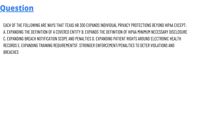So, our today's question which we will be discussing is: each of the following ways that Texas HB 300 expands individual privacy protection beyond HIPAA, except — Option A, expanding the identification of a covered entity; Option B, expanding the definition of a HIPAA minimum necessary disclosure.